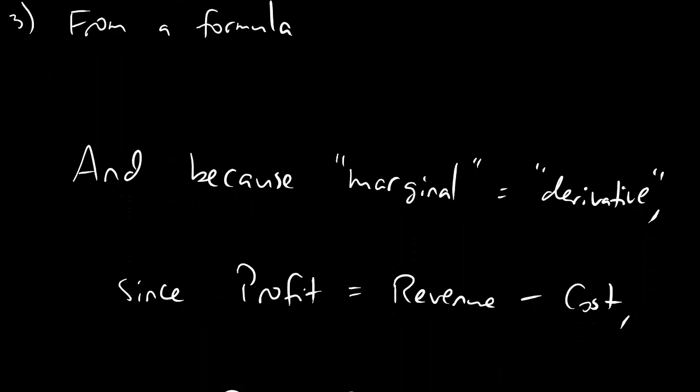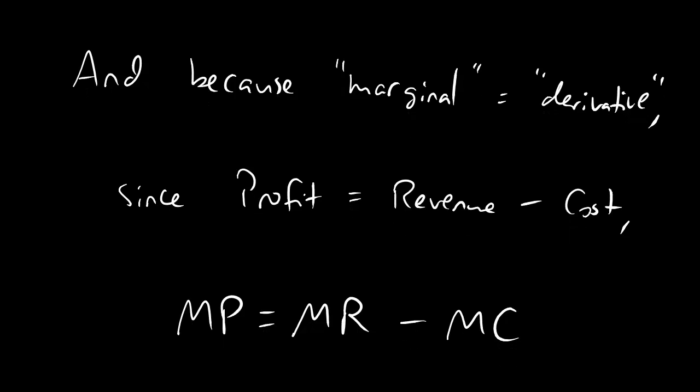Last thing I want to tell you is that because marginal and derivative basically mean the same thing as far as we're concerned, you may remember this equation that says profit equals revenue minus cost. It turns out to be true that marginal profit equals marginal revenue minus marginal cost. So you may see a problem that says something like, here's a table for my revenue values, here's a table for my cost values. Estimate the marginal profit. And all you would have to do is find the marginal revenue using the revenue chart, the marginal cost using the cost chart, and then subtract those two puppies and that'll tell you marginal profit. It's no big deal as long as you remember your profit equals revenue minus cost.